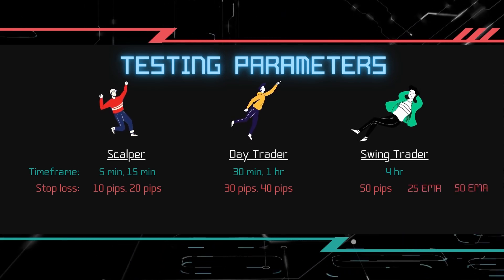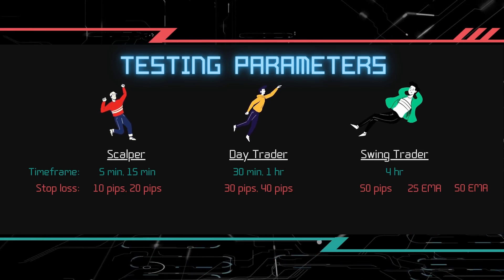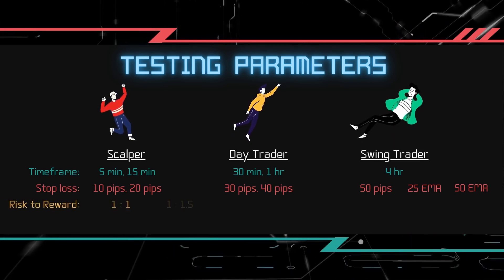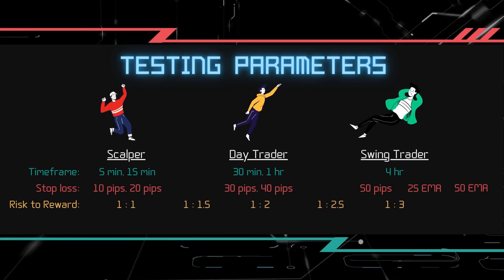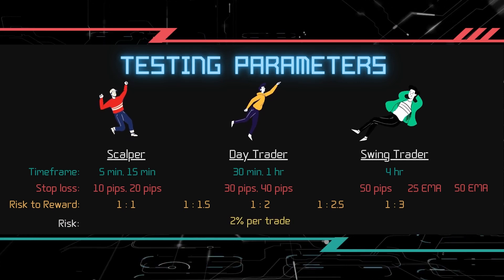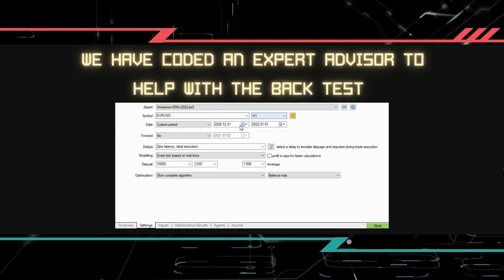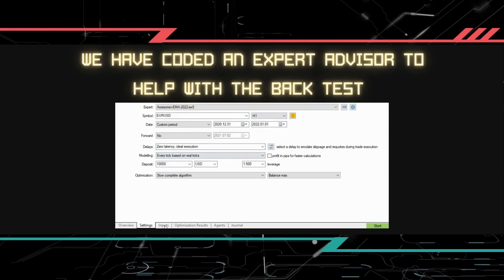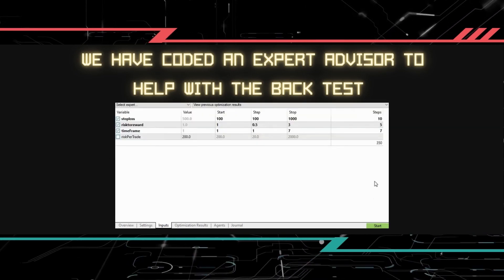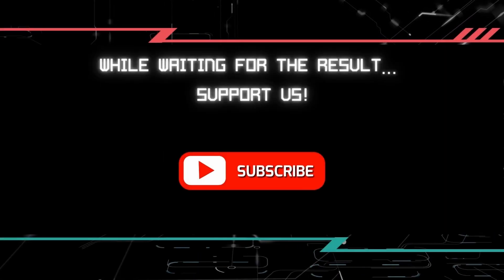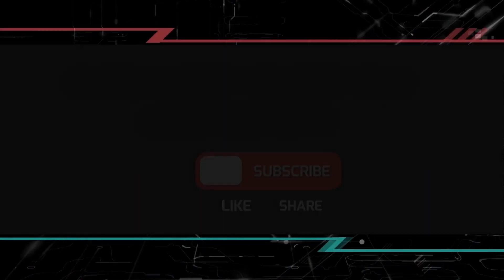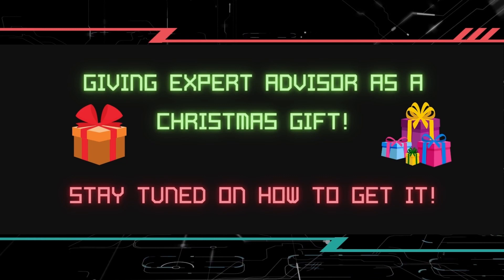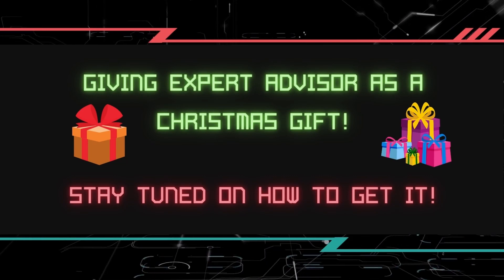We will also include stop loss levels with reference to the 25 and 50 exponential moving averages. Our risk to reward ratio will be between 1 to 3 with an increment of 0.5 each time. We will be risking 2% of the account for each trade. We have coded an expert advisor to help us automate the backtest. There is a total of 245 permutations to backtest. Watch out for the request code and stay tuned to the end of the video to find out how you can get it.